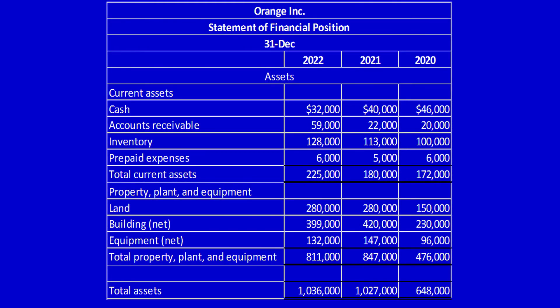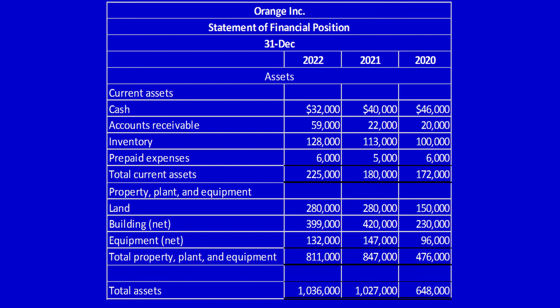Let's use Orange Inc. to demonstrate the asset turnover ratio. Note that I have provided a link to my worksheets in the description below this video — I suggest you pause and download them so you can follow along. We can only calculate the ratio for the last 2 years because it uses average total assets, so you need 2 years of data to calculate the ratio for 1 year. I need 2022 and 2021 to calculate for 2022, and 2021 and 2020 to calculate for 2021.